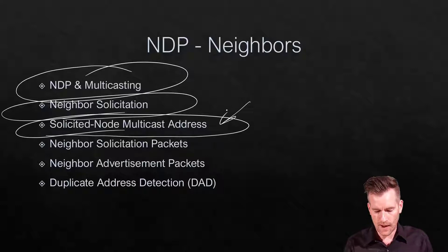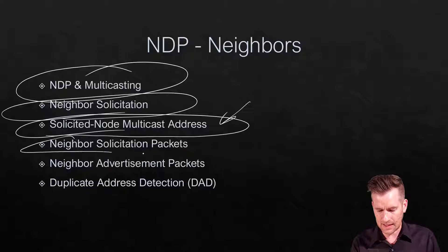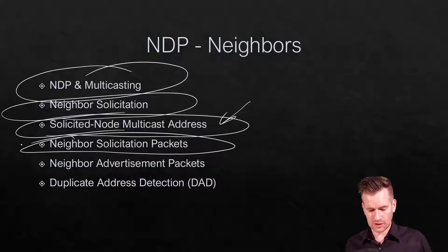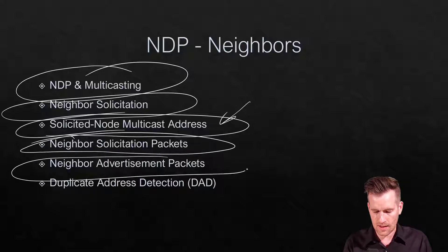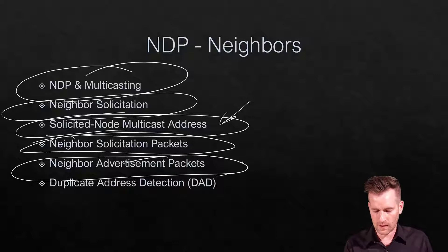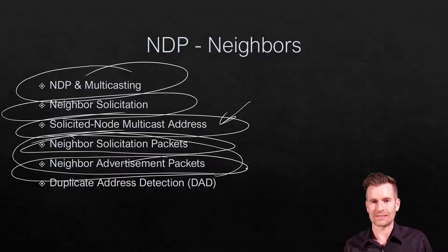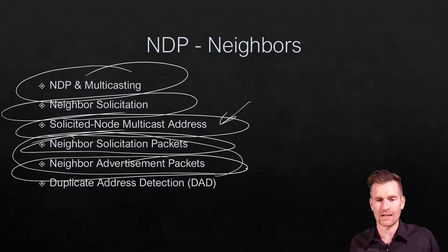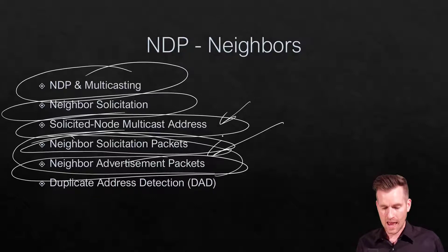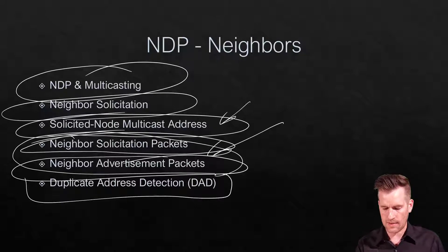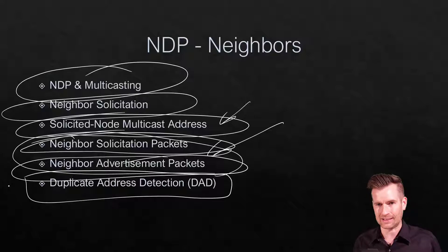We'll talk about neighbor solicitation packets and what those look like, and then neighbor advertisement. What we're going to take a look at is the addresses — the layer 2 and layer 3 addresses of these different packet types. And then finally, we'll do the same thing with duplicate address detection.